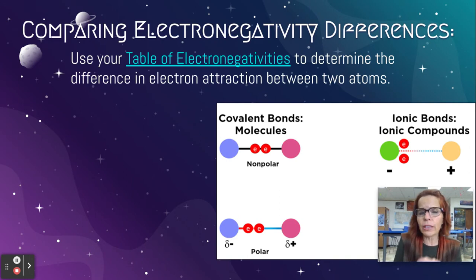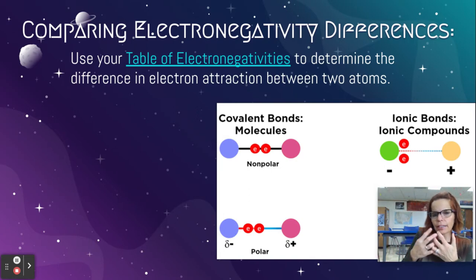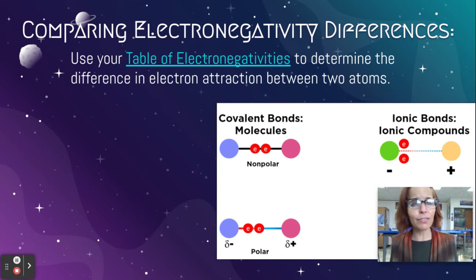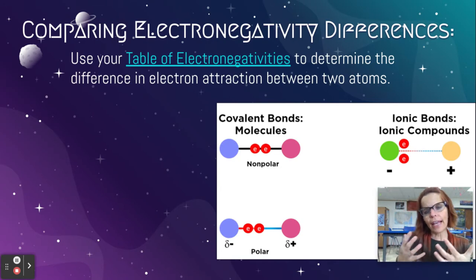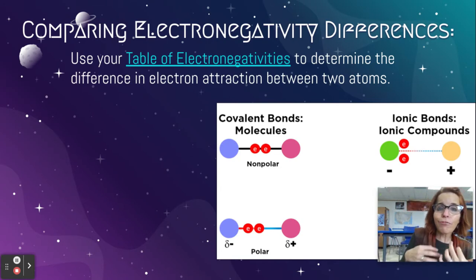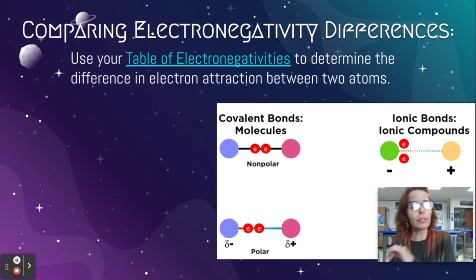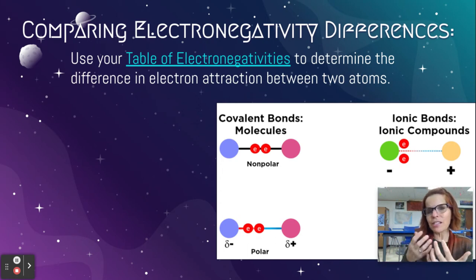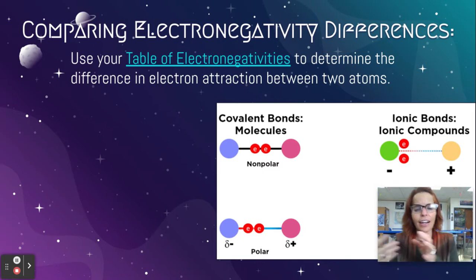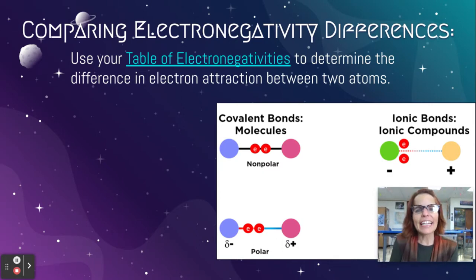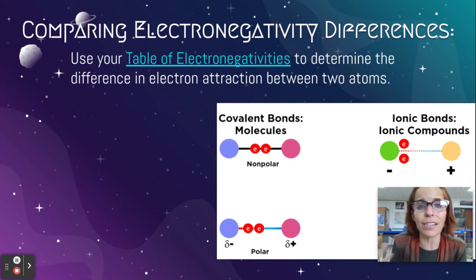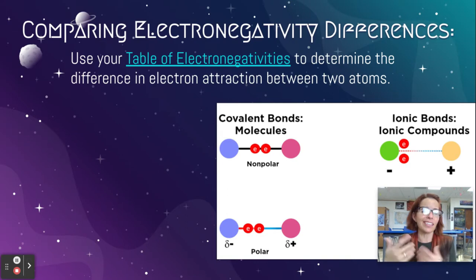When the bond is polar, when one is somewhat more electronegative, it's pulling the electrons closer. Electrons are negatively charged. So if it has the electrons more often or a greater amount than the other one does, that atom is going to start developing a slightly negative charge. And the other atom that's losing its electrons — the pink one doesn't have the electrons as much.